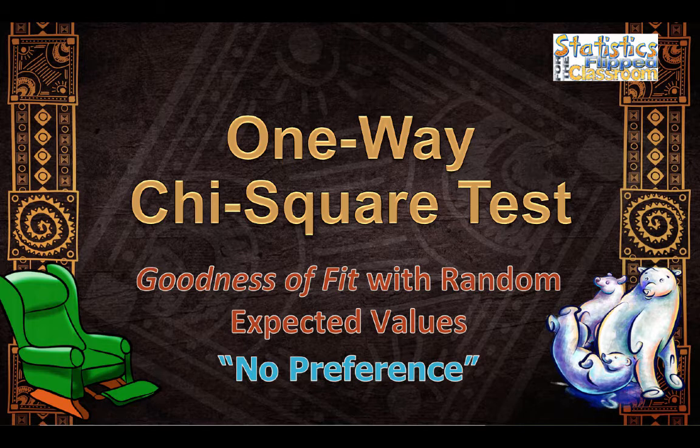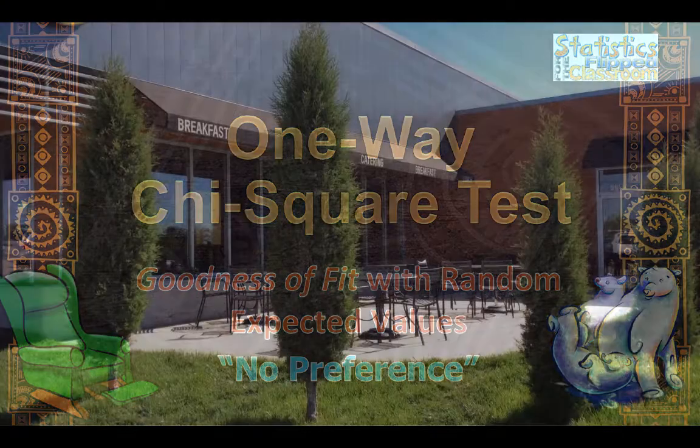We are ready to learn about the one-way chi-square test, goodness of fit with random expected values. A situation where the expected values are occurring randomly, so the observed values should show no preference for one group over another.